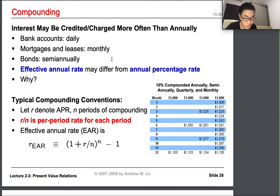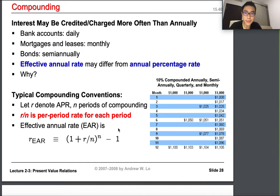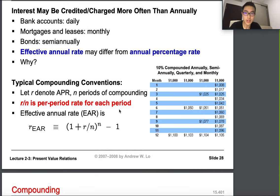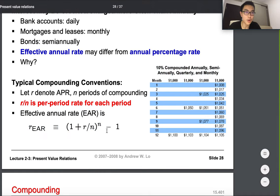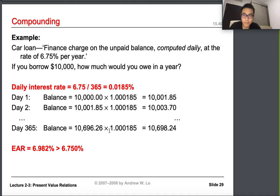What I want you to understand by the end of this section is the difference between APR and EAR. APR is the annual percentage rate; EAR is the effective — or equivalent — annual rate. The government now forces banks to disclose EAR rather than just APR, because the effective annual rate is different from the annual percentage rate, and showing only APR can be misleading.